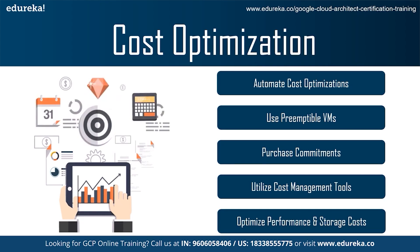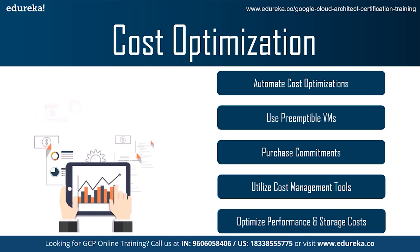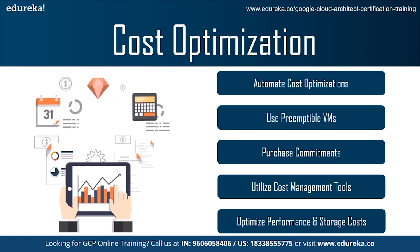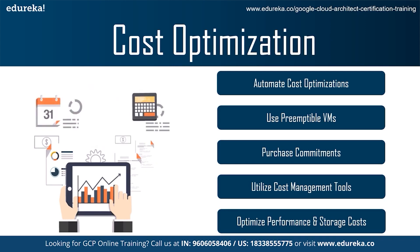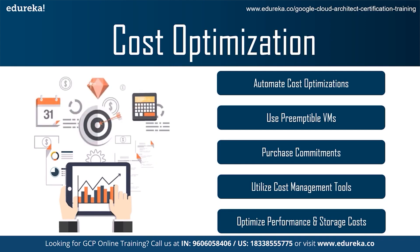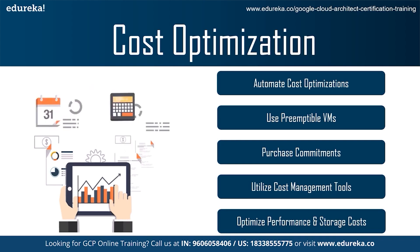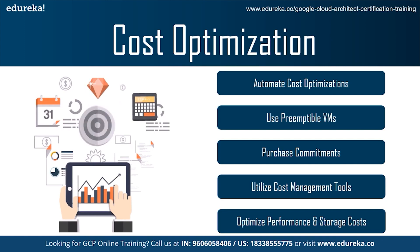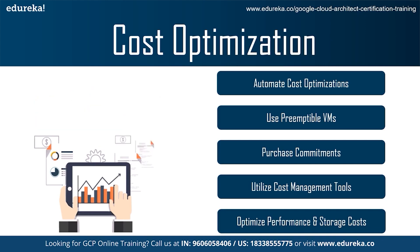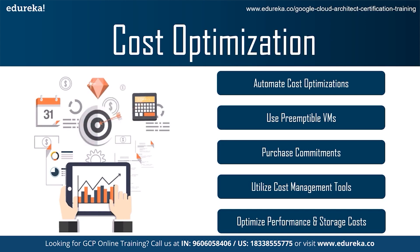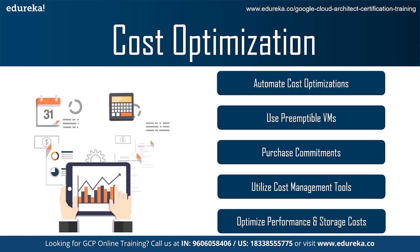Fourth is to utilize cost management tools that take action. Using third-party tools for cloud optimization helps with cost visibility, governance and cost optimization. Make sure you aren't just focusing on cost visibility and recommendations, but find a tool that takes those actions for you. This automation reduces the potential for human error and saves organization time and money by allowing developers to reallocate their time to more beneficial tasks.